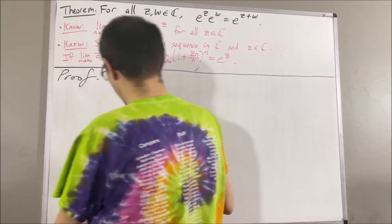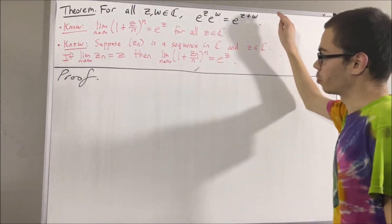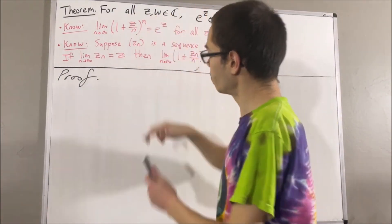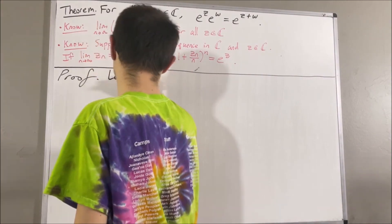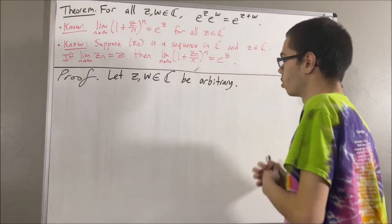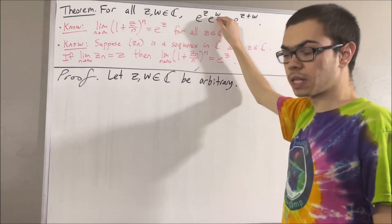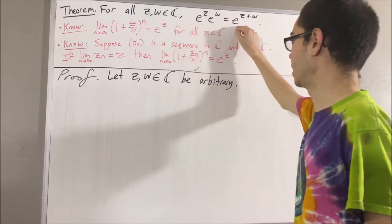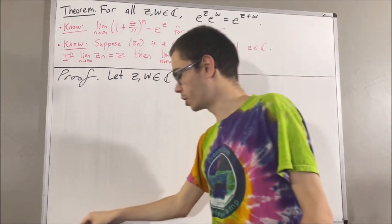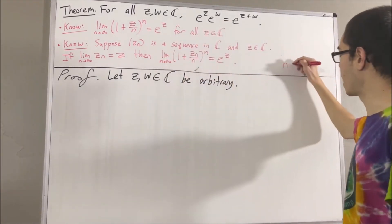Okay, so now let's get into proving this theorem. To start out the proof, let's give ourselves two arbitrary complex numbers z and w. From here, we want to prove that e to the z times e to the w is equal to e to the z plus w. And we are going to consider an arbitrary positive integer n.